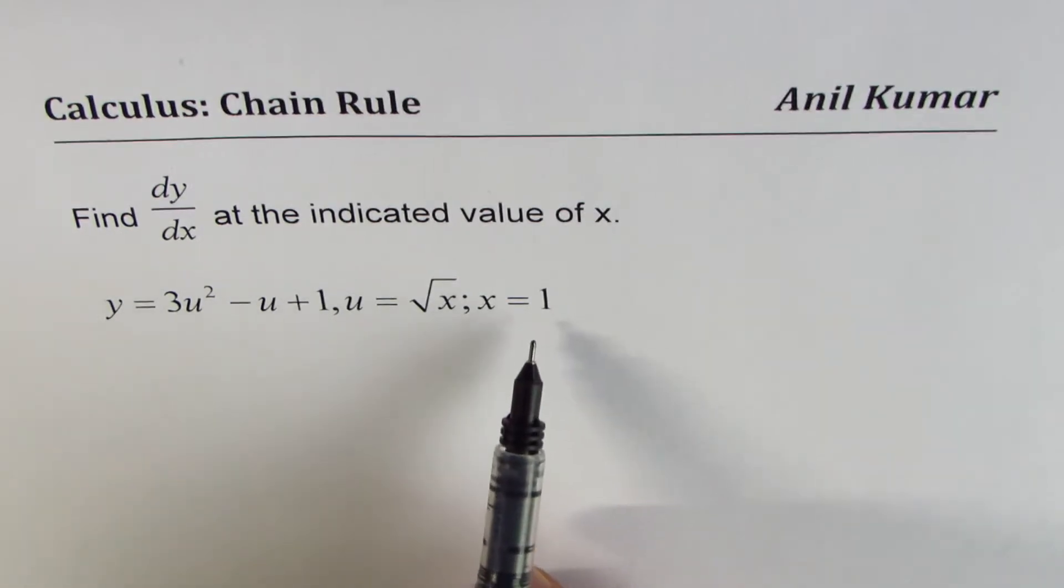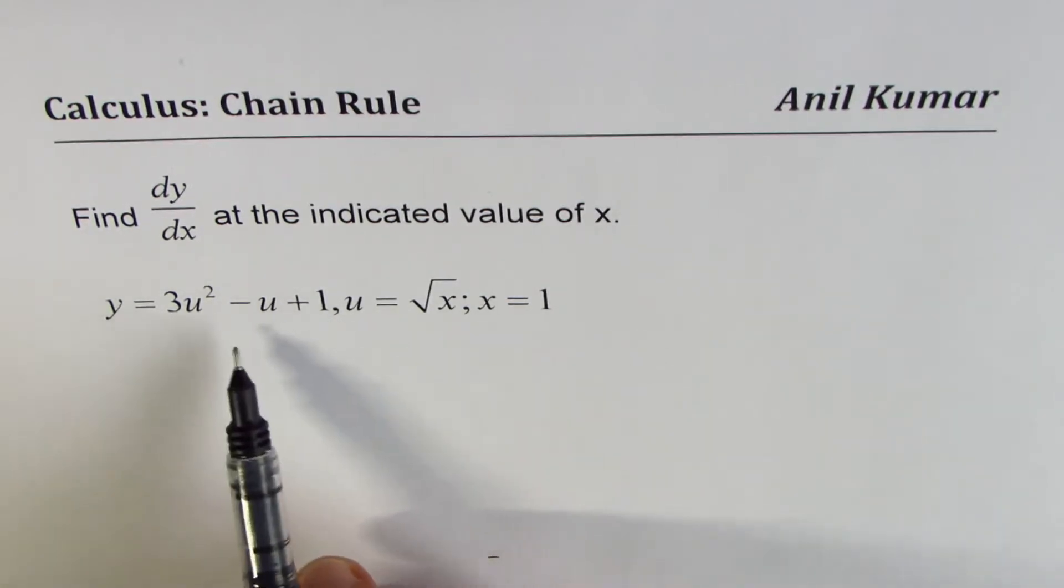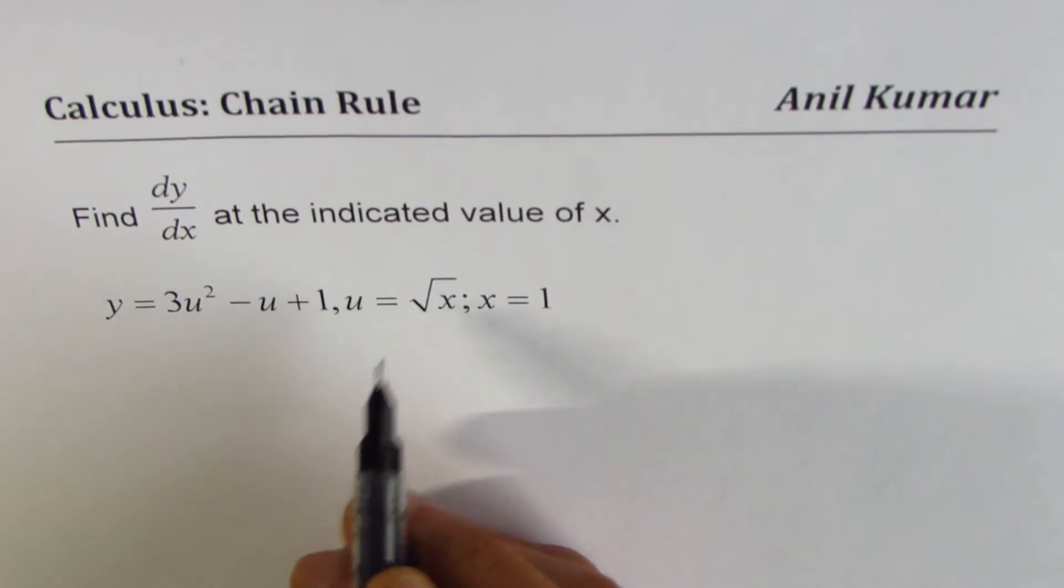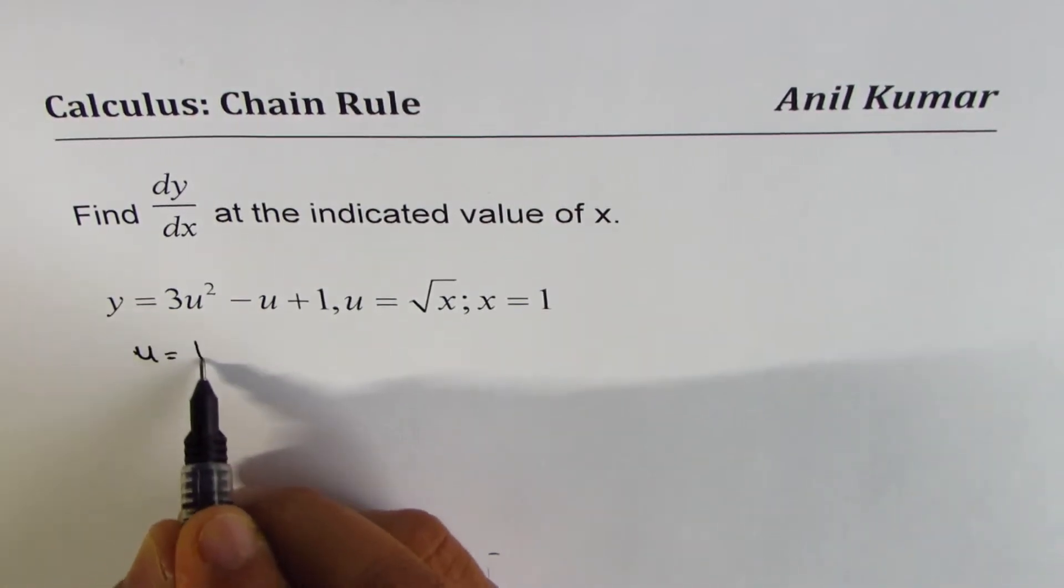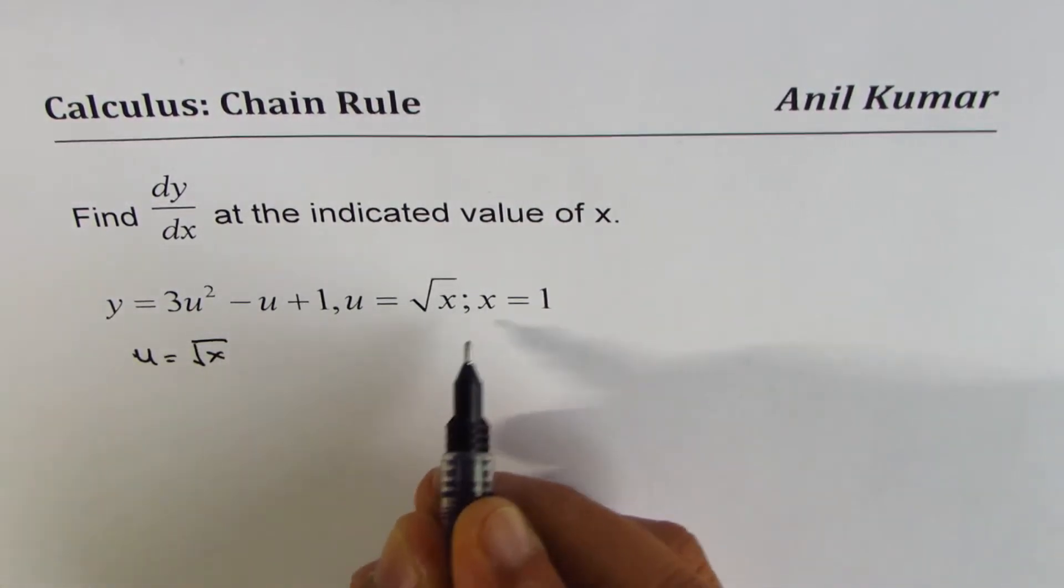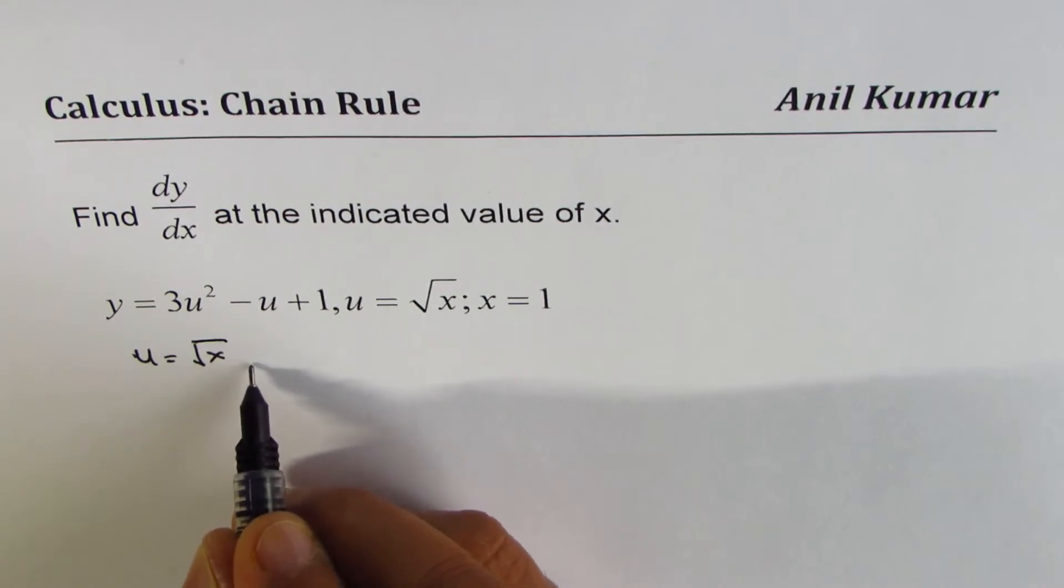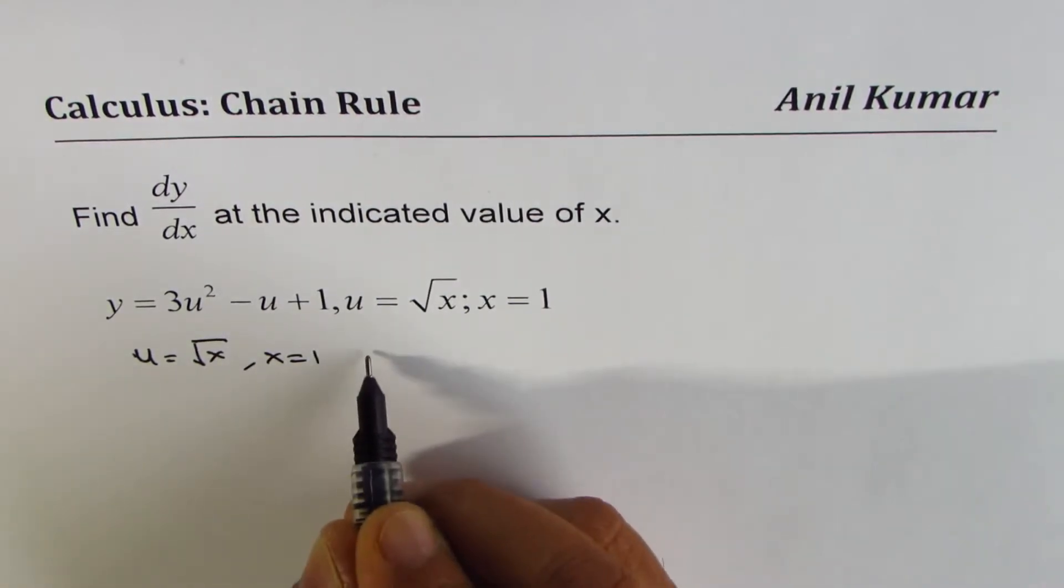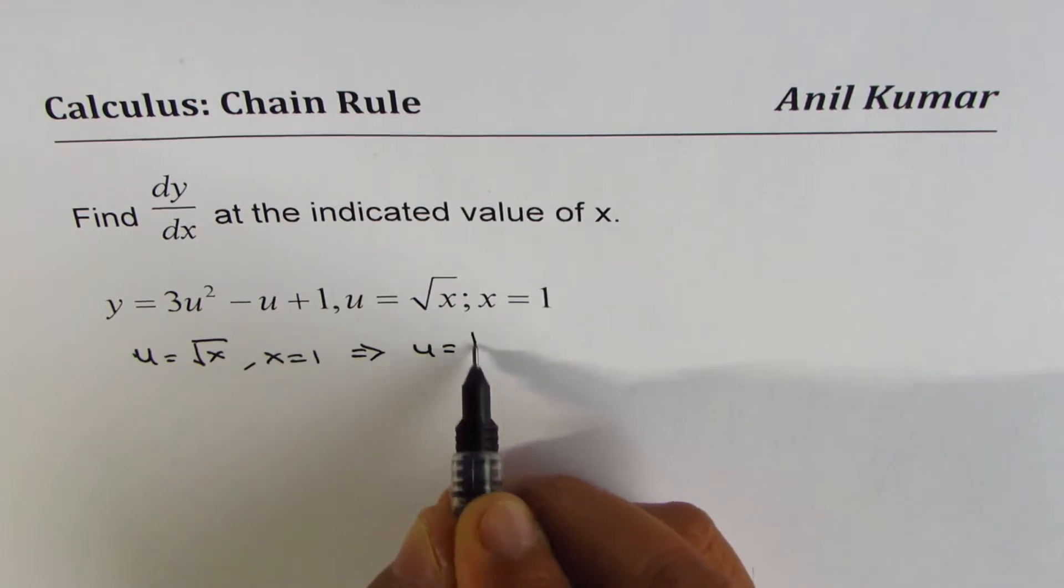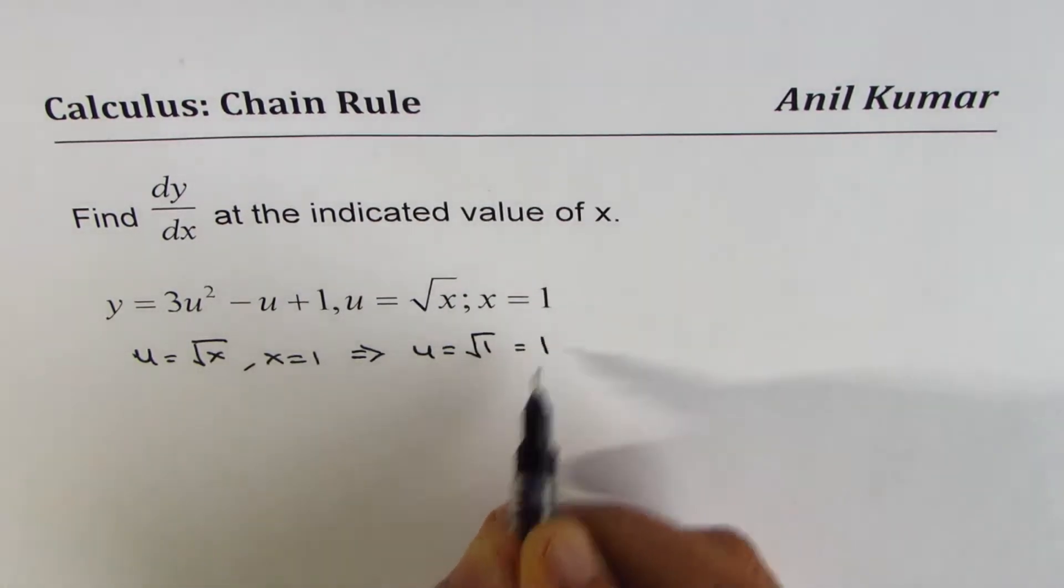To begin with, we should actually find the values at x equals 1. What is u equal to at x equals 1? So if I substitute 1 here, we know u is square root of x. If x equals 1, then it implies that u equals square root of 1, which is 1.